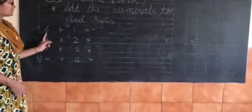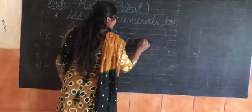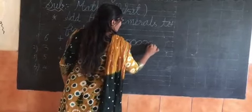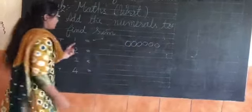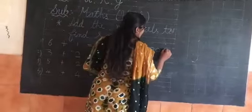Which number is this? Six. So first make here six circle. One, two, three, four, five, six. Then which number is this? One. So make here one.